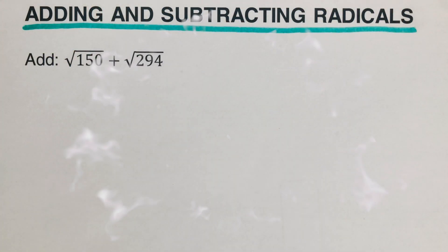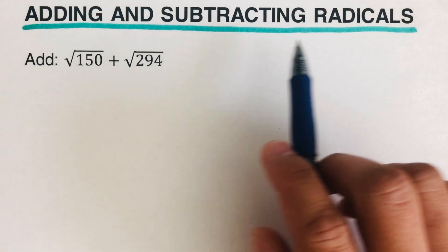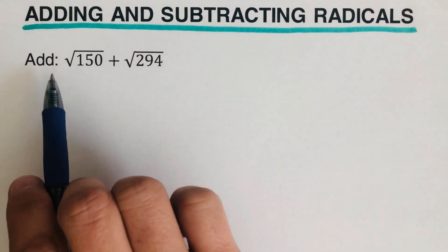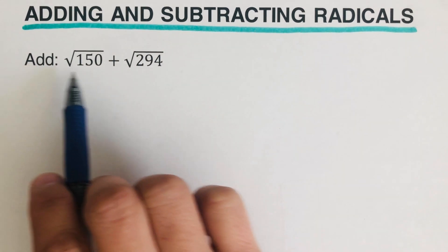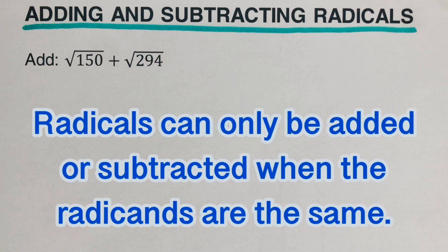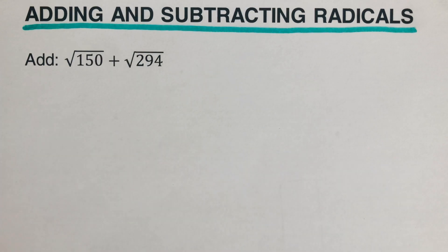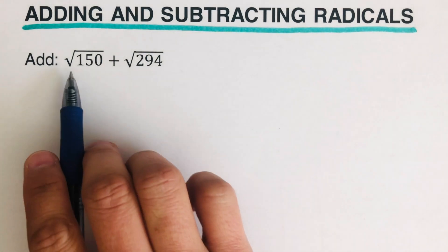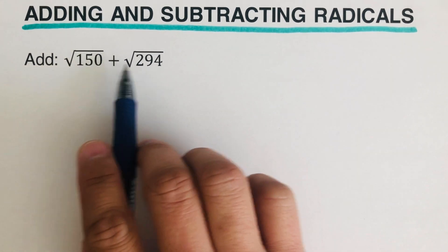Hello everyone! In this video, we will be adding and subtracting radicals. Before we look into this example, we need to remember a very important rule: radicals can only be added or subtracted when the radicands are the same. The radicand is the number that's inside the radical symbol.